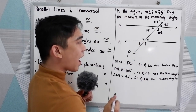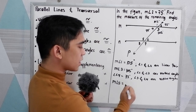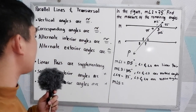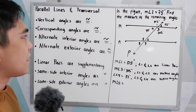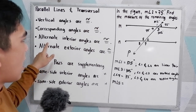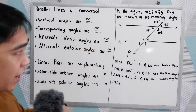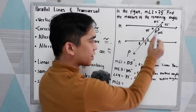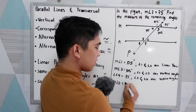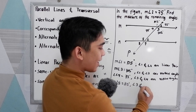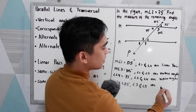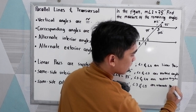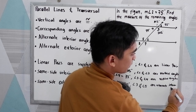Next, angle 5. For angle 5, we can use the theorem that alternate interior angles are congruent. We have angles 3 and 5 — they are alternate interior angles. So angle 5 is equal to angle 3, which is 105 degrees. Reason: angle 3 and angle 5 are alternate interior angles.